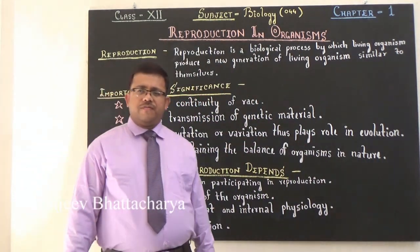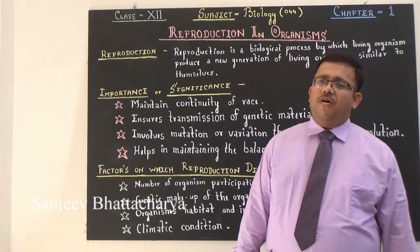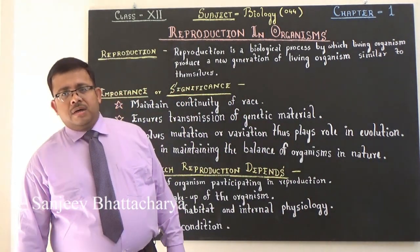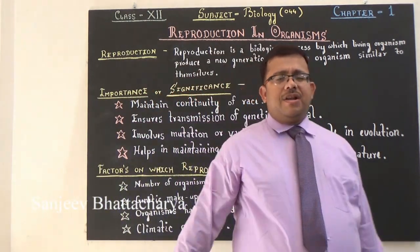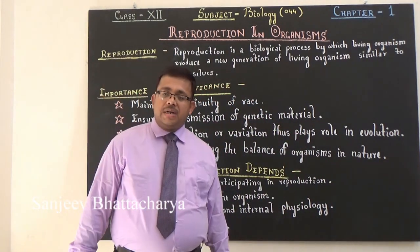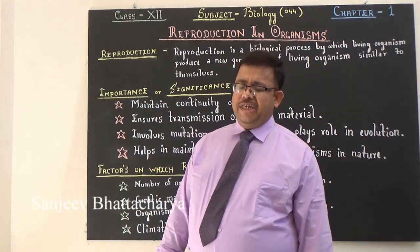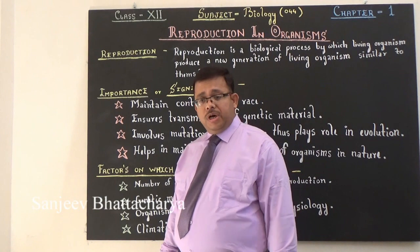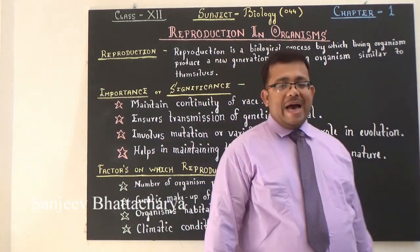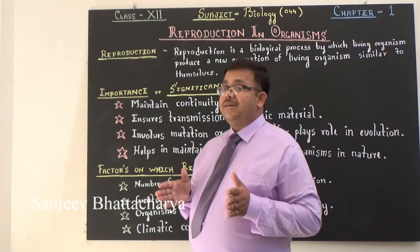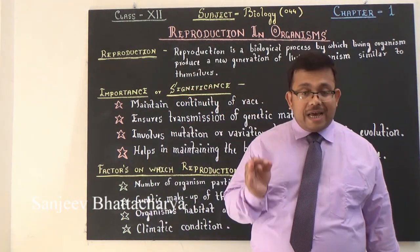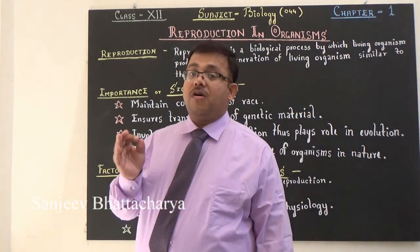A question was asked in CBSE board examination: Reproduction is not an essential vital process for the survival of an individual organism, yet organisms invest huge resources on this process. Why? Reproduction is treated as a life process because: Number 1, reproduction is a means for the survival of the population of a species. Number 2, reproduction adds new individuals to a population. Number 3, reproduction maintains the balance of the number of organisms of a species in nature.